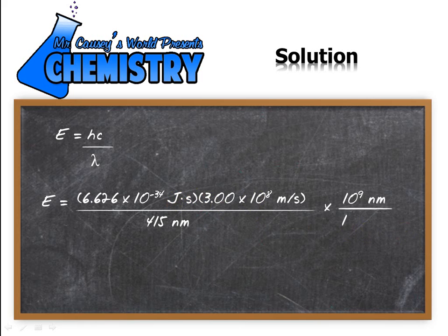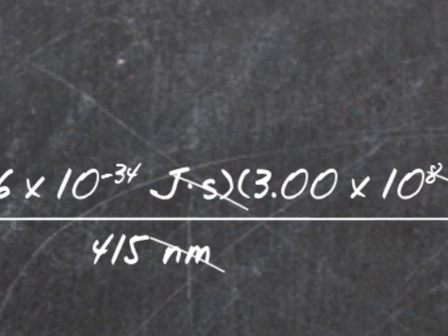Now, let's do our dimensional analysis. Seconds cancel out. Nanometers and meters cancel out. What's that leave us? It leaves us with joules.